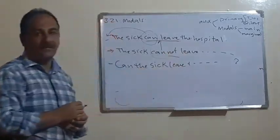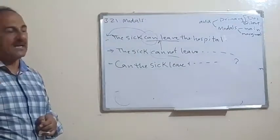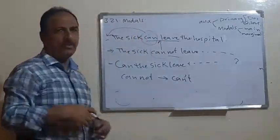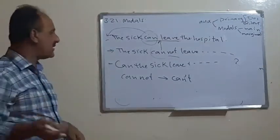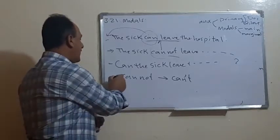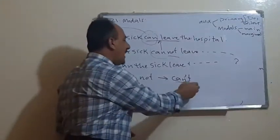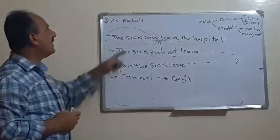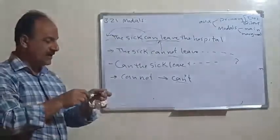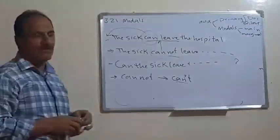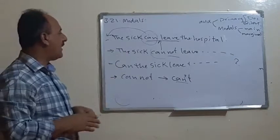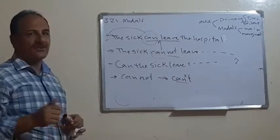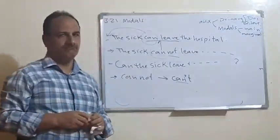In most cases we use abbreviations: 'cannot' becomes 'can't,' 'shall not' becomes 'shan't,' 'would not' becomes 'wouldn't,' 'may not' becomes 'mayn't,' etc. These abbreviations are mostly used in spoken English or speech, while in writing and for emphasis we use the full form. Regarding tense, most modal verbs have a present and past form, but some only have the past — like 'used to' — or only the present — like 'must.'